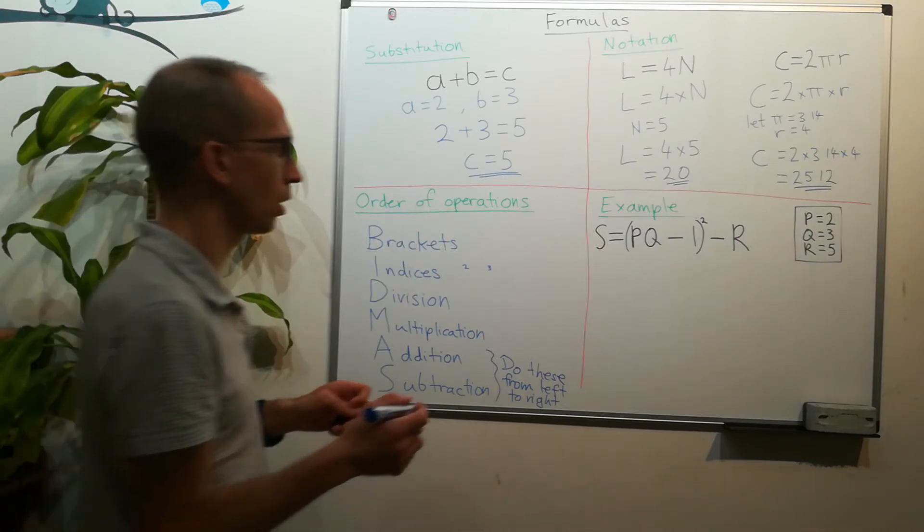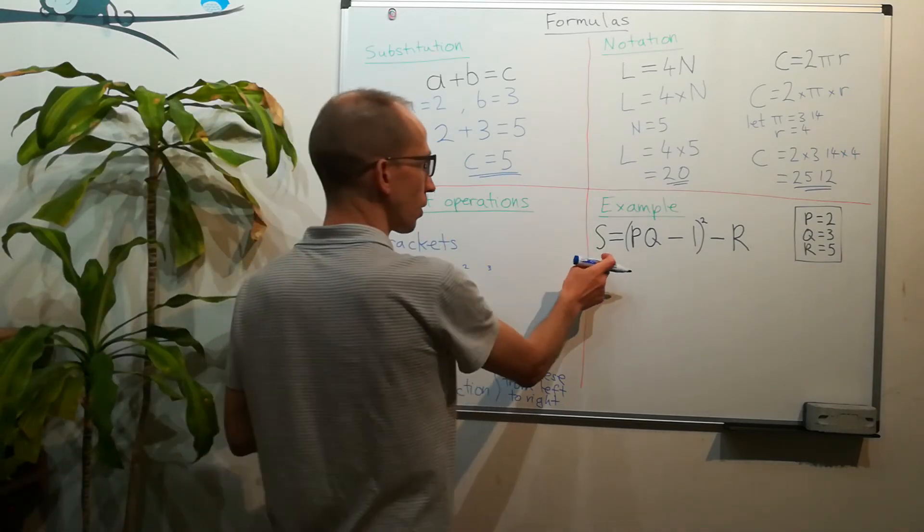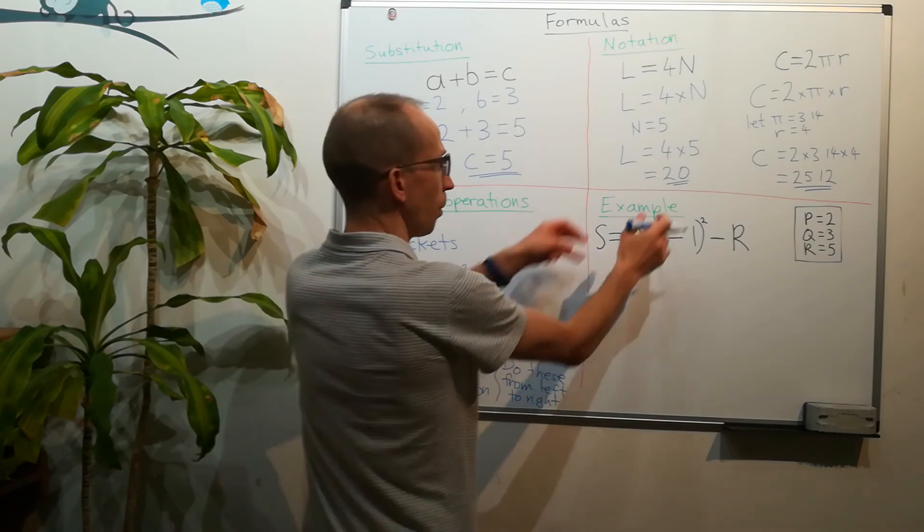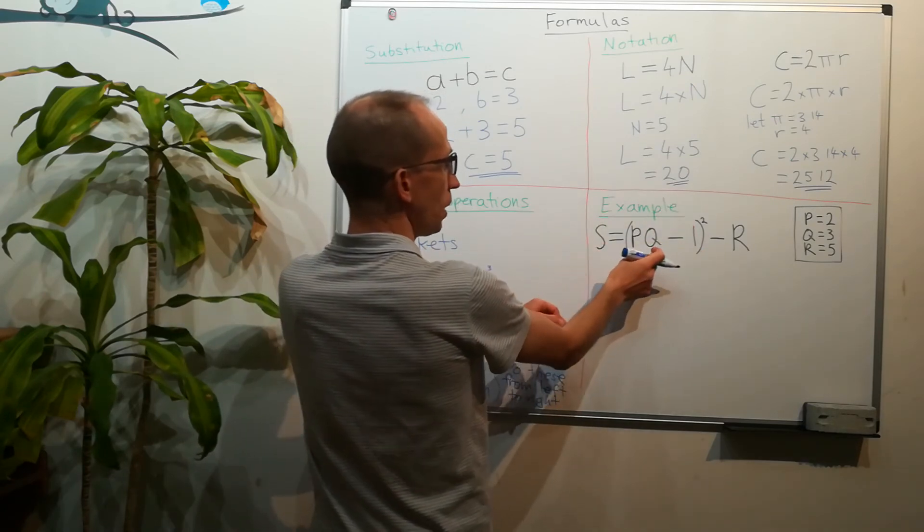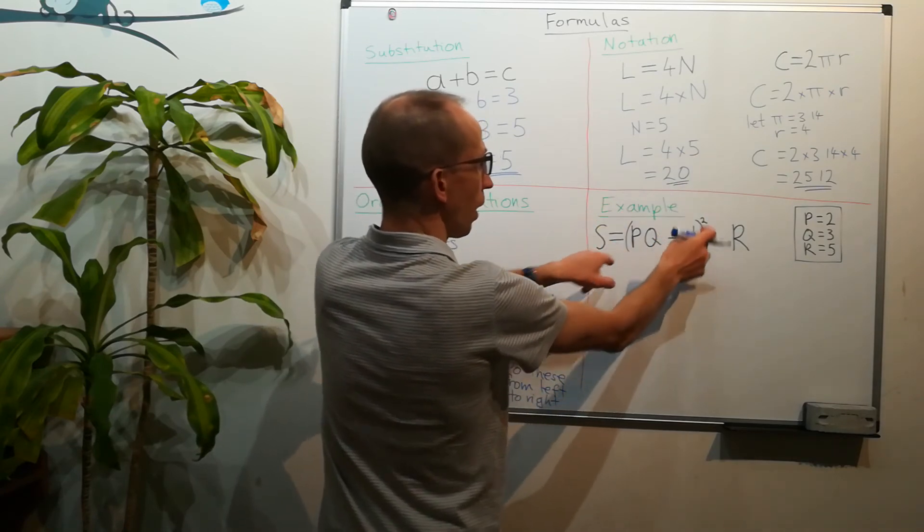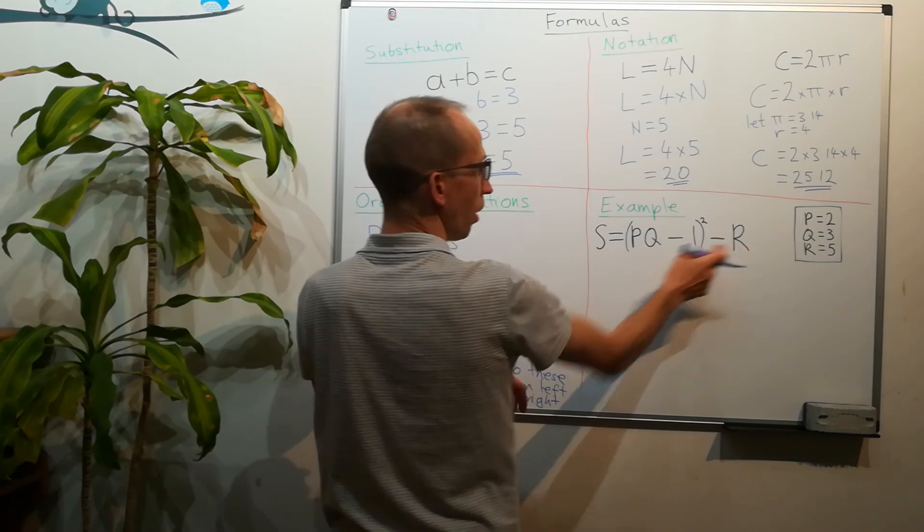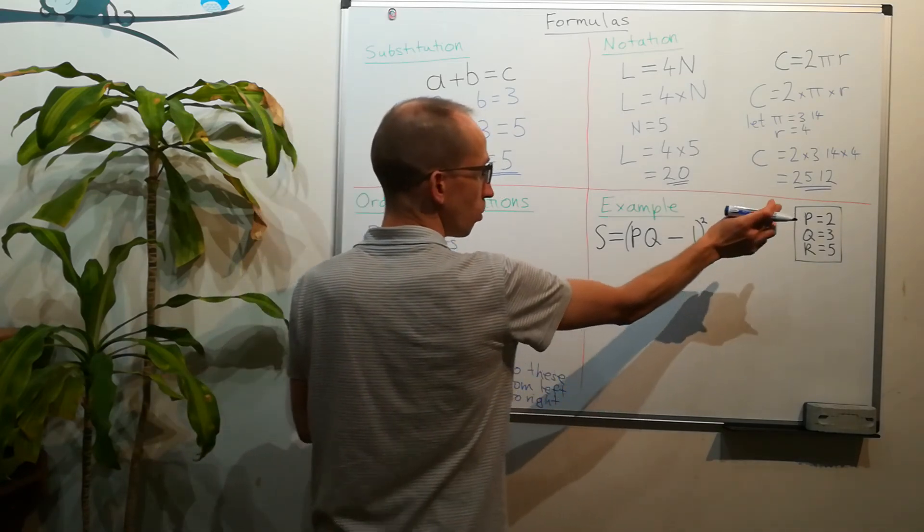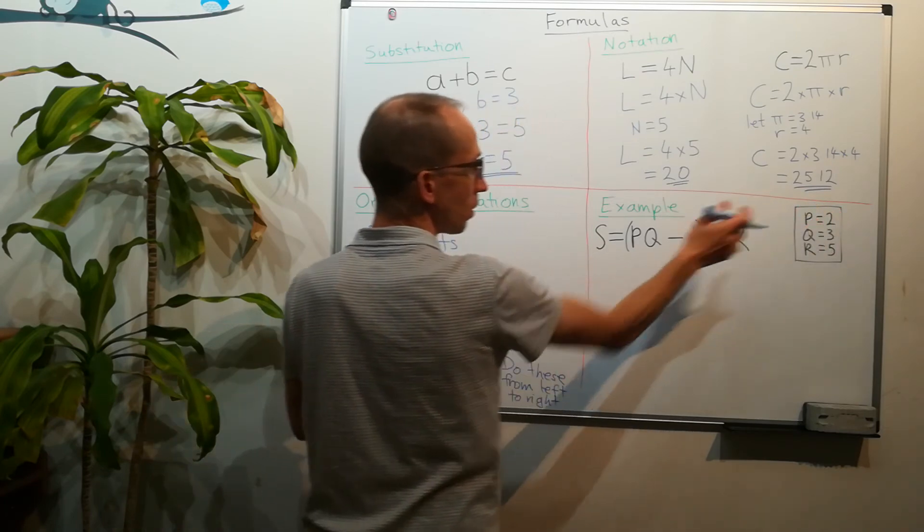So let's have a look at an example. So we've got a formula here: s equals, and then we've got our brackets, pq cubed minus one, and the brackets are squared, minus r. Well the first thing I'm going to do is to substitute my numbers for my letters.